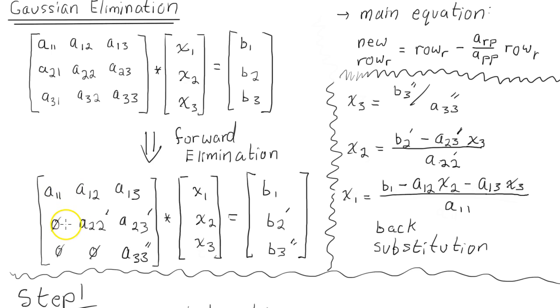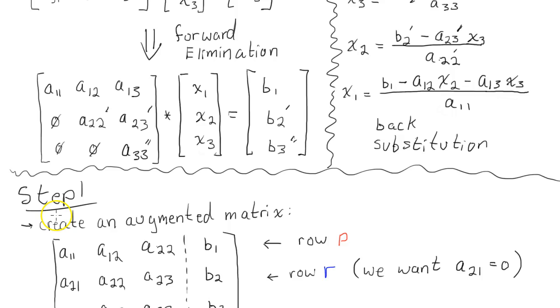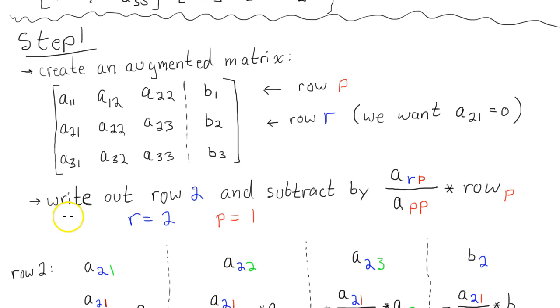That's the whole point of this. So eventually we'll want zeros right here, right here, and right here. But in step one, we're just going to try and get this to zero. And we'll do that by using a row P, sometimes called a pivot row, to modify our row R.